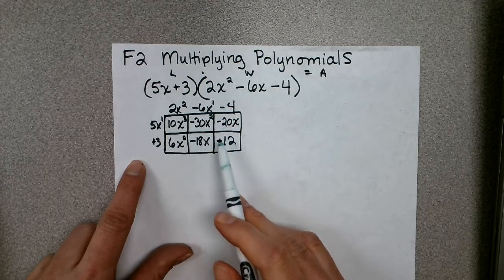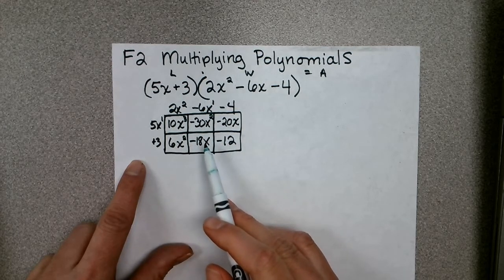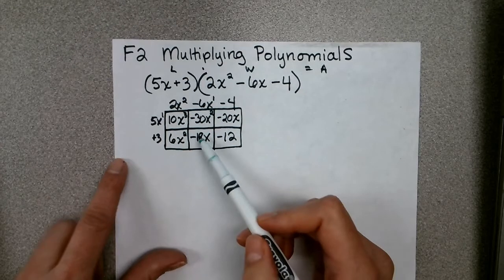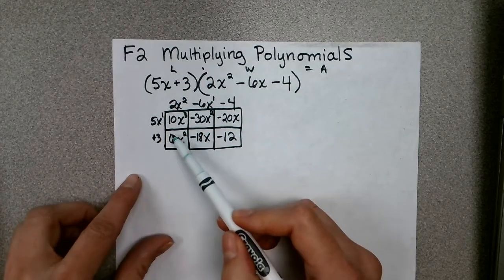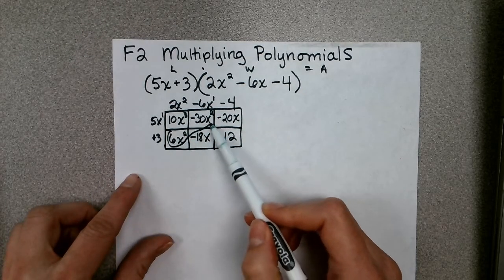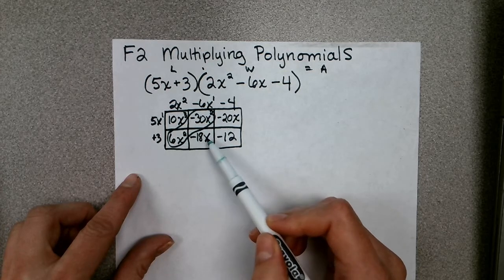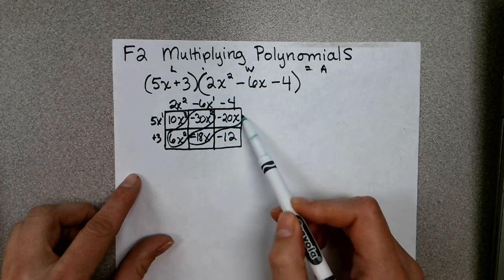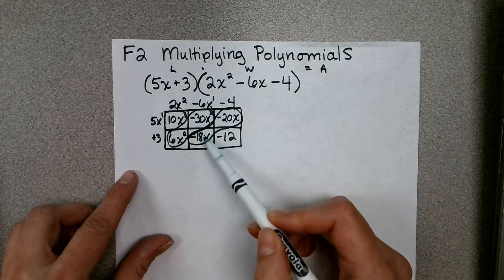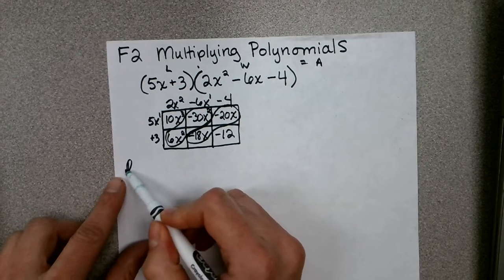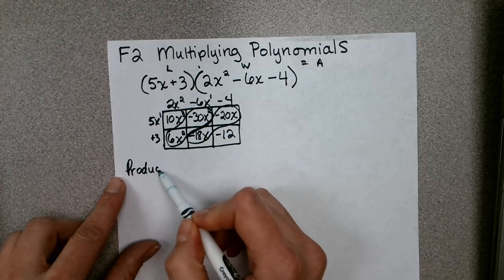Now we're going to add them together. However, we can only really combine like terms. So you may notice that these two terms can be combined because they're both x squared terms, and also these two terms can be combined because they're both x terms.